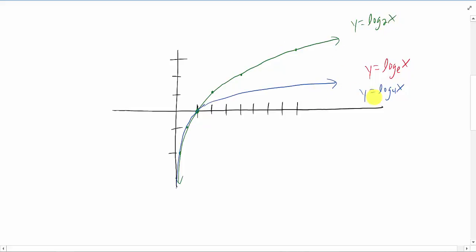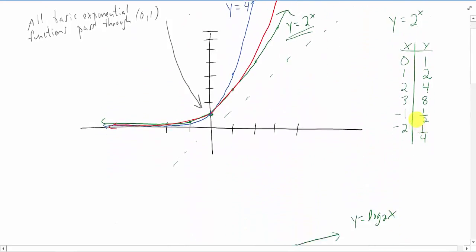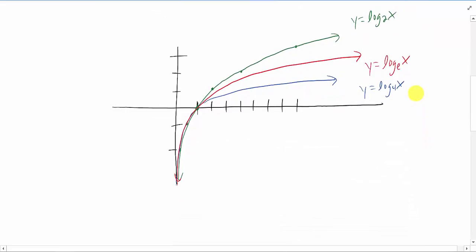We could do the same thing with our log base 4 of x and our very special log base e of x. All we did was reflect the graphs above across the line y equals x. We took those graphs right there. We reflected them. That means that they're an inverse. And we're naming these things log base 2 of x, log base e of x, and log base 4 of x.